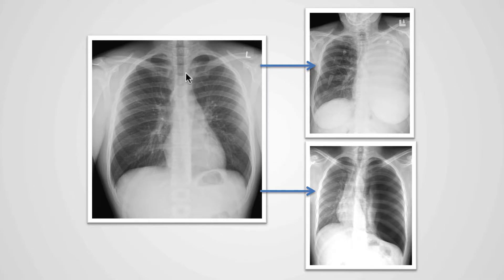Here we have an example of a normal chest x-ray. If we focus on the left hemithorax, this is what normal looks like. In this example, we see that the left hemithorax is too white, because the left lung is collapsed. On this other example, we see that the left hemithorax is too black because there is air outside of the lung — this is a pneumothorax. And because the heart and mediastinal structures are shifted to the right side, this is called a tension pneumothorax.